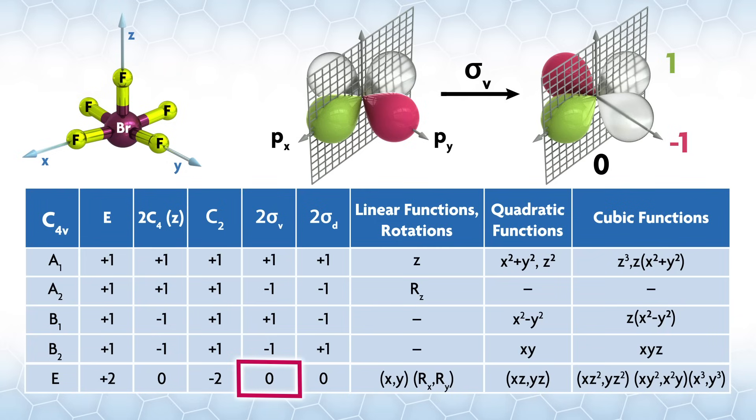The sigma v operations are along the x and y axes. The character will be the same regardless of which plane of symmetry we look at, so let's do the one along x. The orbital along the mirror plane doesn't move, but the py inverts its phase, so one orbital gives a plus one and the other minus one for overall zero.